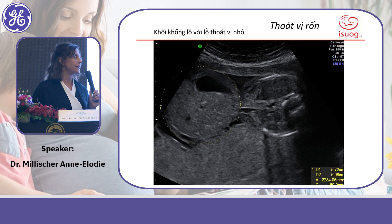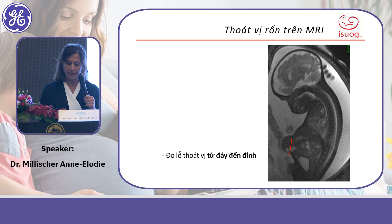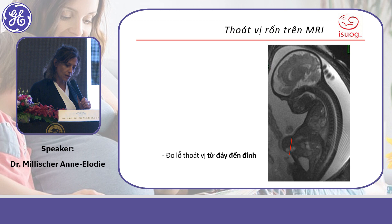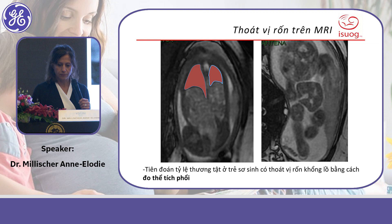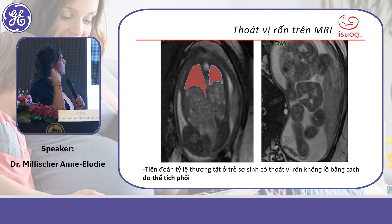The advantage of MRI is to measure the defect more reliably. In particular, concerning the presence of the umbilical cord insertion, three-plane acquisition with MRI is more reliable. You can also identify whether the cord inserts at the base or at the apex of the hernial sac.